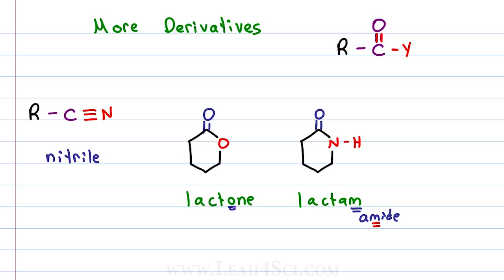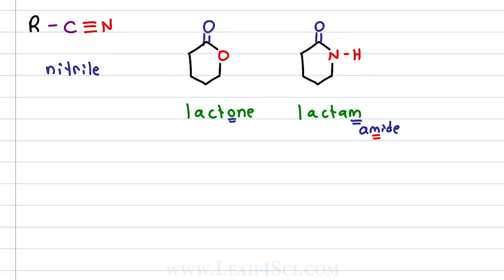The way I remember the difference is the lactone has the extra O for the cyclic ester. You may also come across something that looks like this, it's a cyclic structure with an oxygen in the middle but another carbonyl.